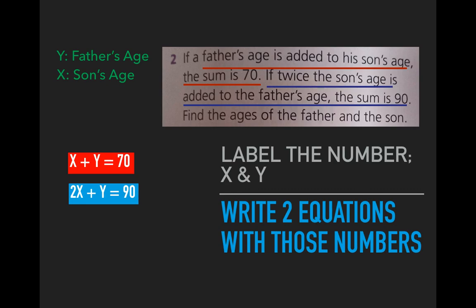And again, you'd solve those via simultaneous equations. x, when you solve it, would give you the son's age. y would give you the father's age. And those are our two examples for this.